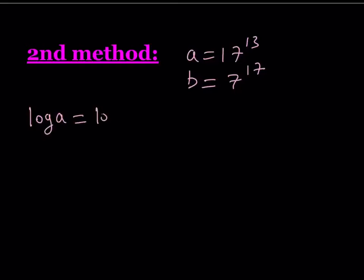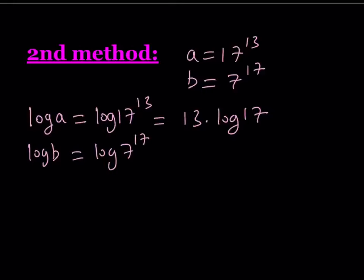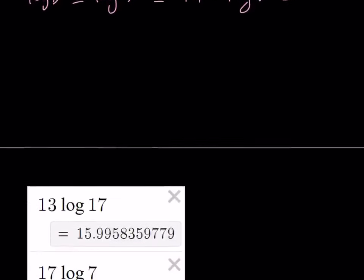Log a is log 17 to the power 13, which can be written as 13 times log 17. And log b is log of 7 to the power 17, which can be written as 17 times log 7. So which of these numbers is larger? You can evaluate these numbers by using a calculator. For this purpose I'm just going to give you those values.